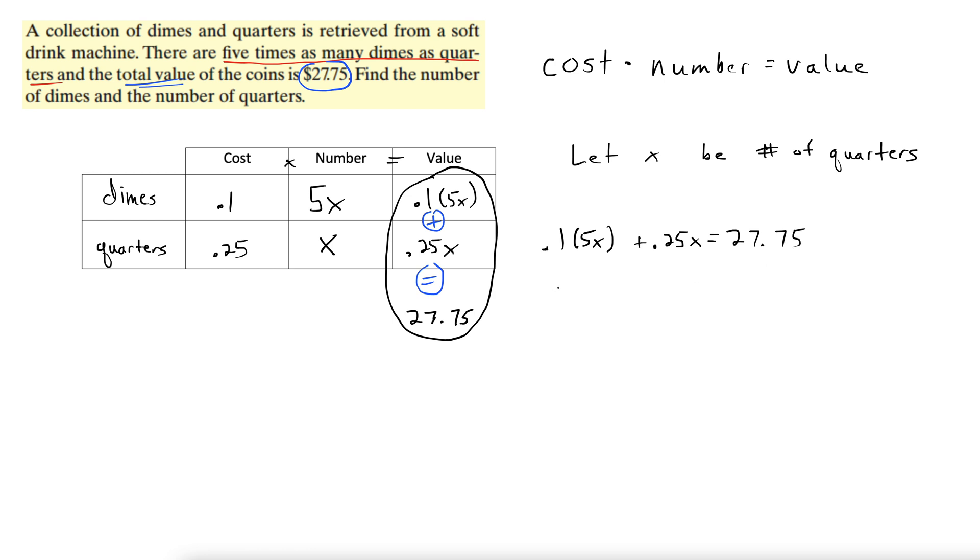Alright. Well, 0.1 times 5x plus 0.25x. Well, 0.1 times 5 is 0.5x plus 0.25x. Alright. Divide both of these by 0.75.